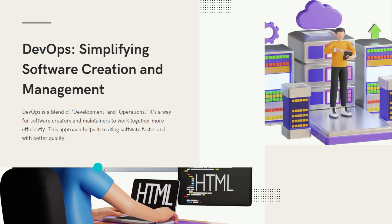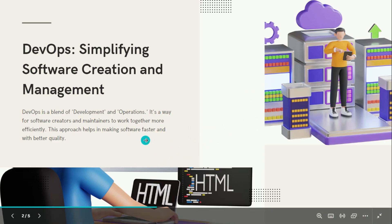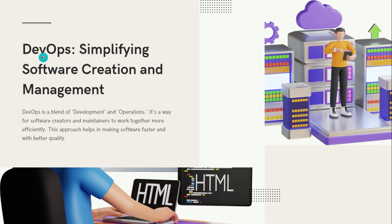While you are developing a software or an application, you need to inform the operations team as to what kind of servers you need, what load they have to take, and all those requirements have to be passed on to the operations team. They have to work in coordination with each other — that is what is meant by DevOps.